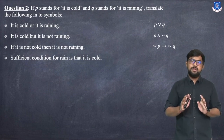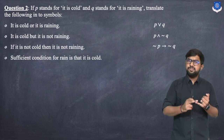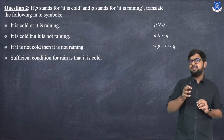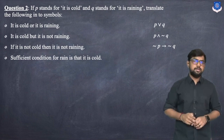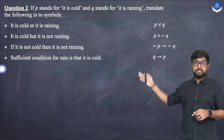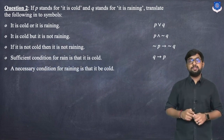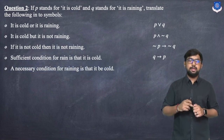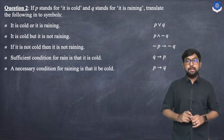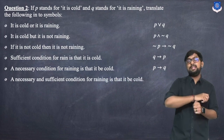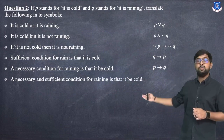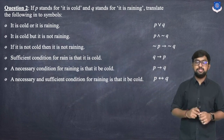Next: 'A sufficient condition for rain is that it is cold' — this gives Q → P. Then: 'A necessary condition for raining is that it be cold' — this gives P → Q. Finally: 'A necessary and sufficient condition for raining is that it be cold' — this gives P ↔ Q.